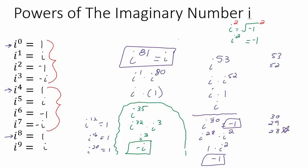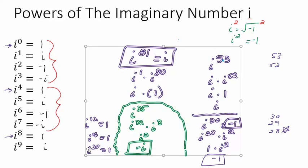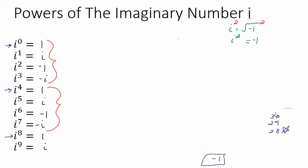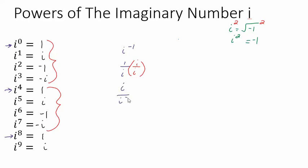What if you have a negative exponent? Let's talk about that. Let's try i to the negative 1. That's 1 over i. Multiply the top and bottom by i, giving i over i squared. i squared is negative 1, so that gives i over negative 1, which is negative i. So i to the negative 1 is negative i — notice it fits right into the repeating pattern, just going backwards.